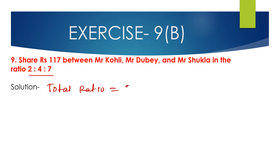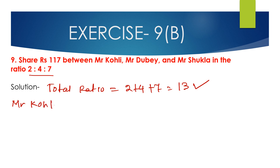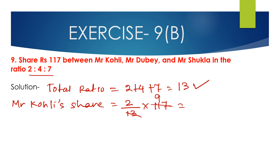The total ratio is 2 + 4 + 7: that is 2 + 4 = 6, and 6 + 7 = 13. Now, Mr. Kohli's share will be 2/13 multiplied by 117 rupees. Cancelling 13 and 117 — since 13 × 9 = 117 — we get 2 × 9 = 18 rupees.